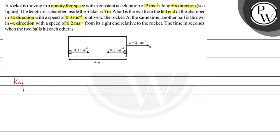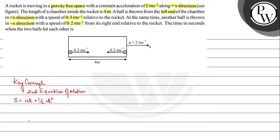So let us see the key concept. Our equation of motion — the second equation of motion — is given by s = ut + ½at². This equation is to be used for this question. If we consider the question, let us see the diagram. It is like this.